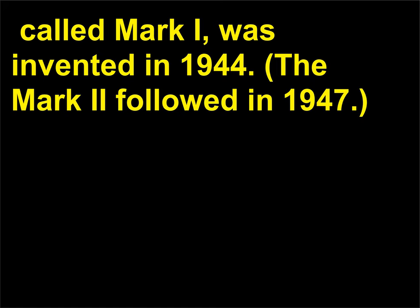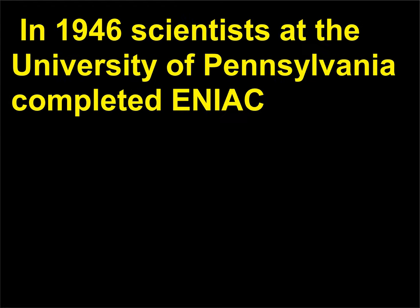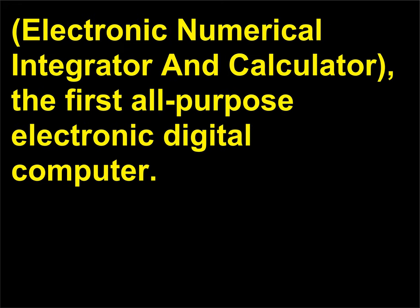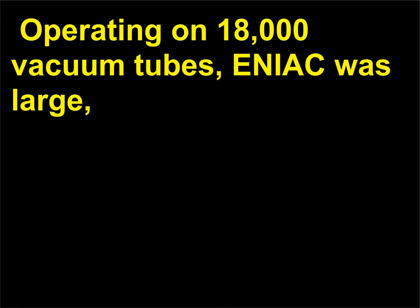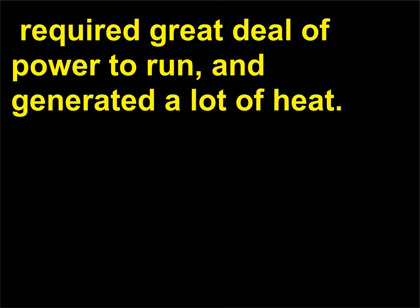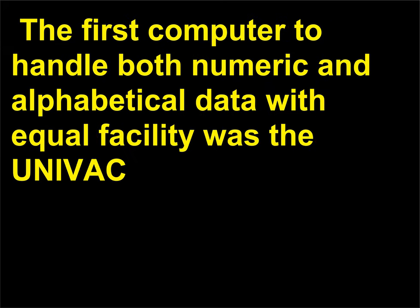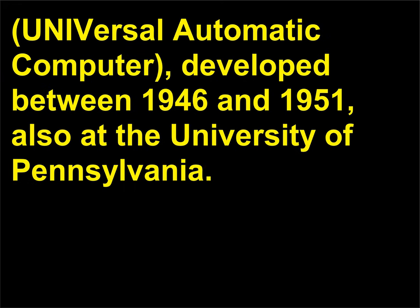In 1946 scientists at the University of Pennsylvania completed ENIAC — Electronic Numerical Integrator and Calculator — the first all-purpose electronic digital computer. Operating on 18,000 vacuum tubes, ENIAC was large, required a great deal of power to run, and generated a lot of heat. The first computer to handle both numeric and alphabetical data with equal facility was the UNIVAC — Universal Automatic Computer — developed between 1946 and 1951, also at the University of Pennsylvania.